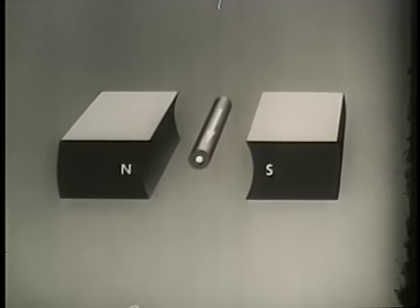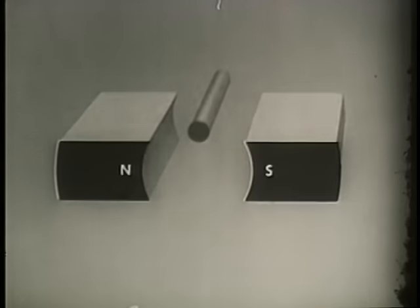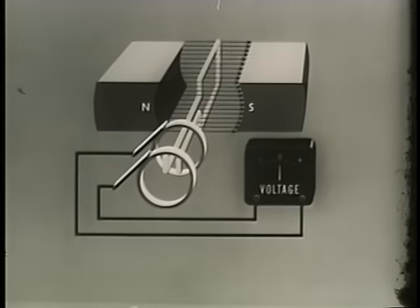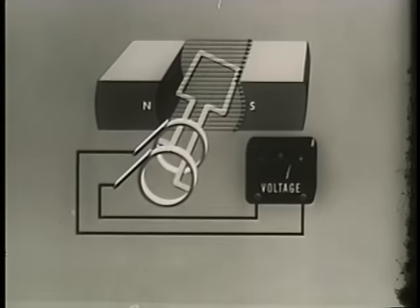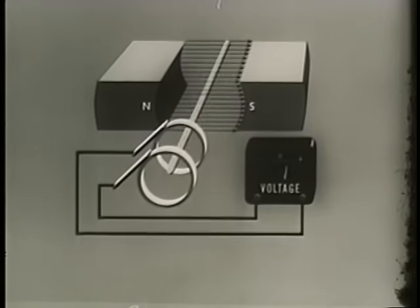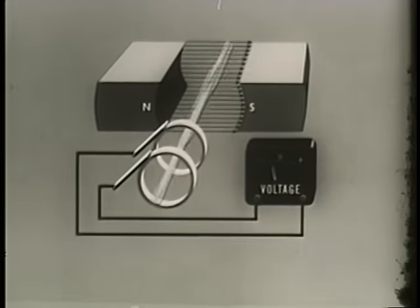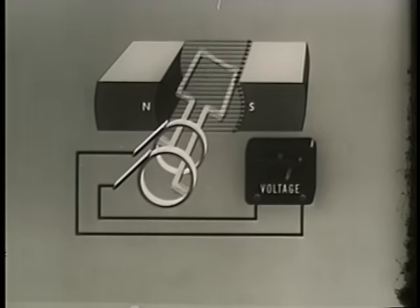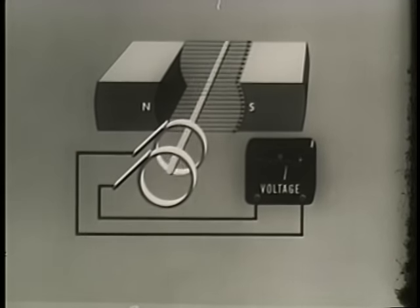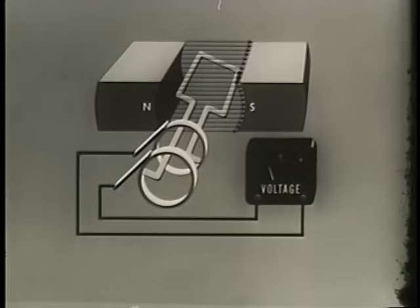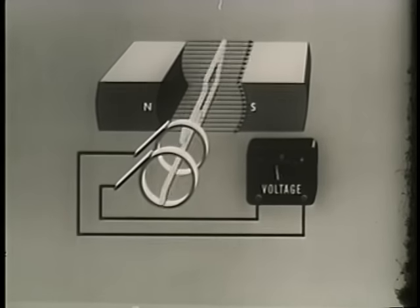Moving a conductor in and out of the field in a straight reciprocal fashion is awkward and impractical. A simple generator of EMF can also be made by rotating a single turn coil within a stationary magnetic field of two magnets with opposite polarity. The loop now, in effect, becomes two conductors because both the top and bottom sections cut magnetic lines during rotation.